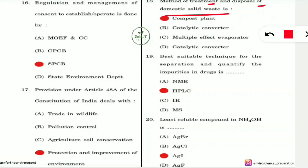Question 18: The method of treatment and disposal of domestic solid waste is called what? It is called a compost plant — biocomposting is a method of treating and disposing of domestic solid waste.